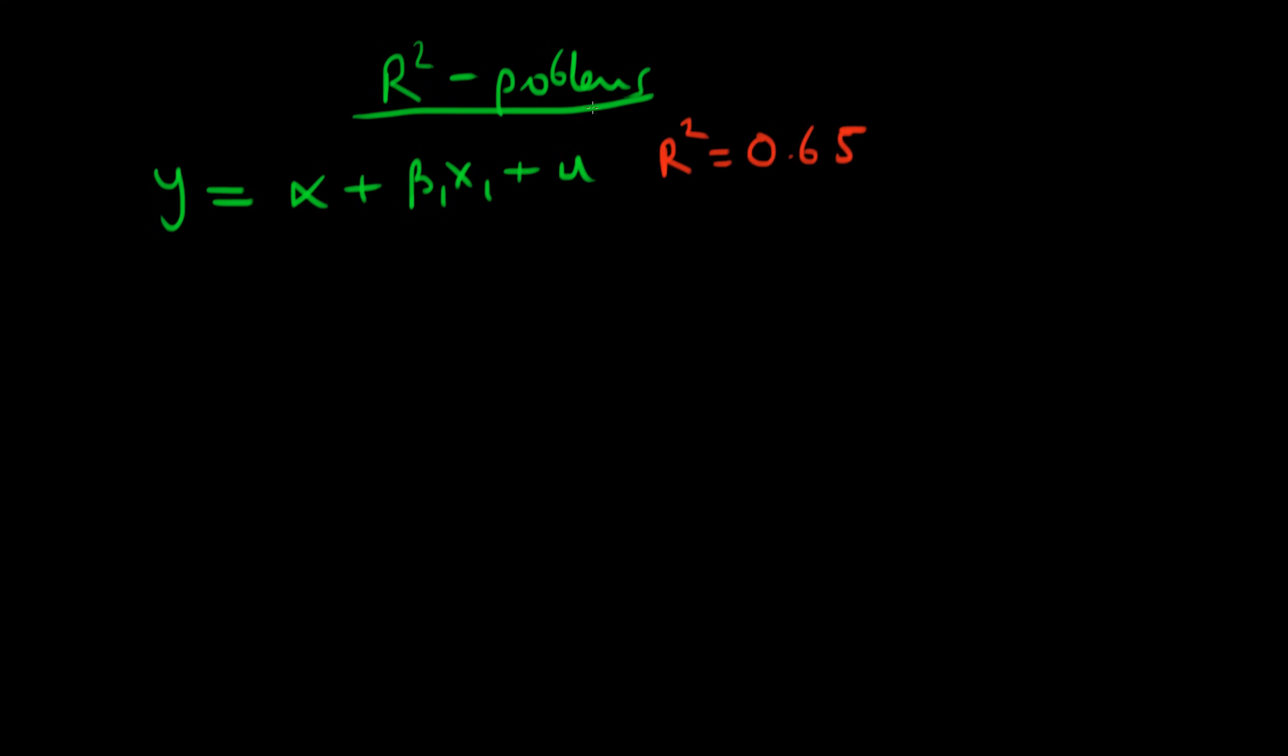So what does that mean? Well that means that 65% of my variation in Y is explained by my X1.